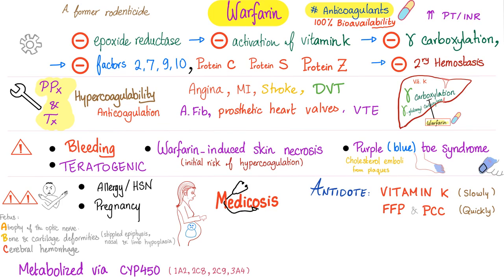Contraindications of warfarin: allergy or hypersensitivity, and pregnancy. If you give warfarin to a pregnant mother, the baby can suffer atrophy of the optic nerve, bone and cartilage deformities, and cerebral hemorrhage — the ABCs of warfarin teratogenicity. Warfarin is metabolized via cytochrome P450, specifically subtypes 1A2, 2C8, 2C9, and 3A4.